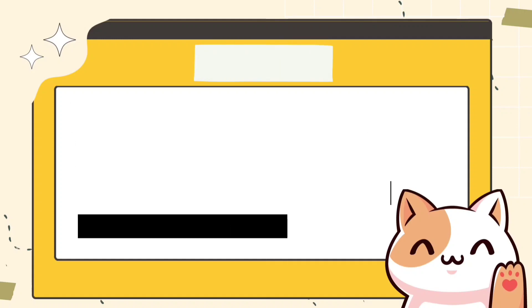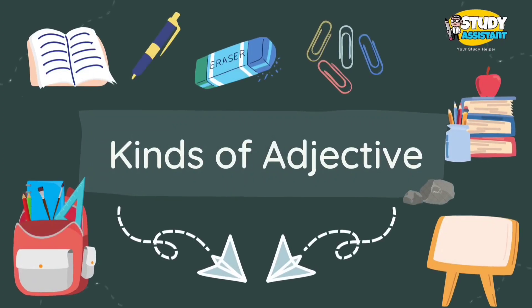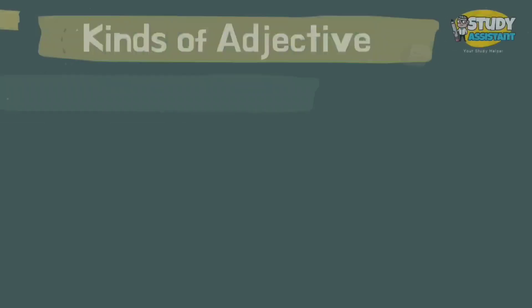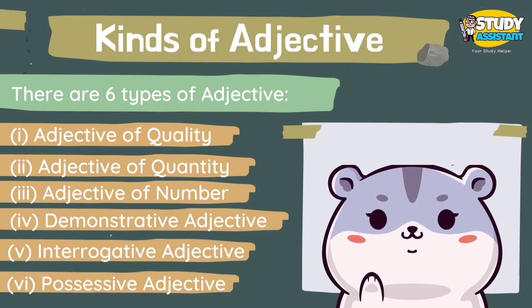Now we have reached the kinds of adjectives. There are totally six types: first, adjective of quality; second, adjective of quantity; third, adjective of number; fourth, demonstrative adjective; fifth, interrogative adjective; and sixth, possessive adjective.